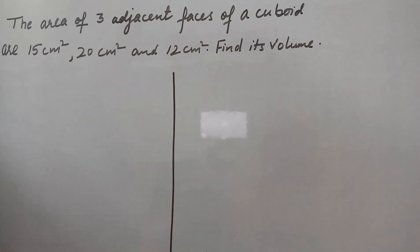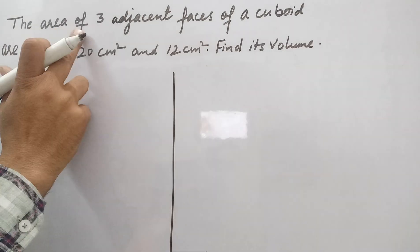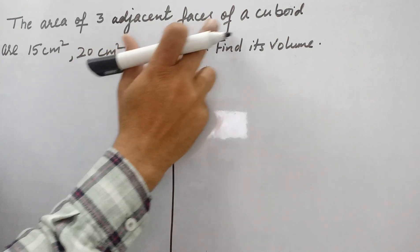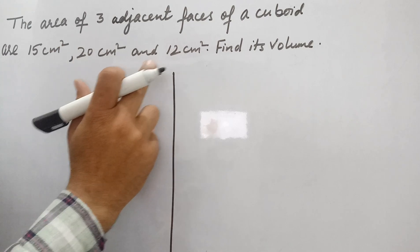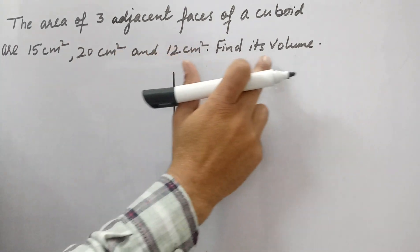Dear students, let's solve this question. The area of three adjacent faces of a cuboid are 15 cm², 20 cm², and 12 cm². Find its volume.